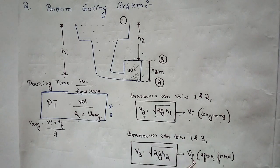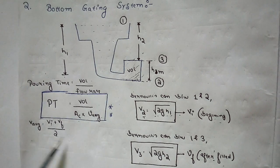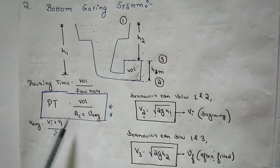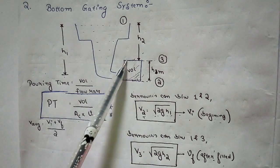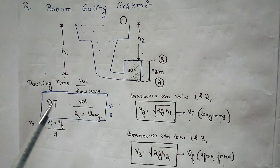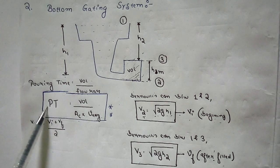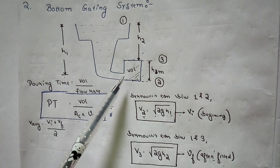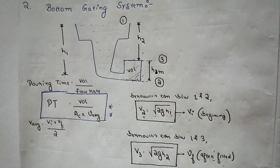With VI and VF known, V_average = (VI + VF) / 2. We can then substitute this into the flow rate to find the pouring time: PT = Volume / (AC × V_average). The volume is the mold cavity volume, and the choke area AC is the minimum of sprue area, runner area, or gate area. This completes the bottom gating system calculation.